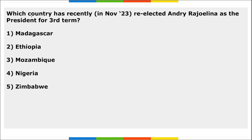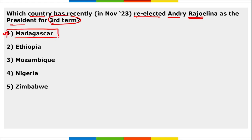Next: which country recently re-elected Andry Rajoelina as president for the third term? It is Madagascar. Madagascar re-elected Andry Rajoelina as the president for the third term, and he won by 59% of the votes.